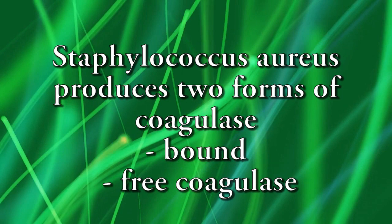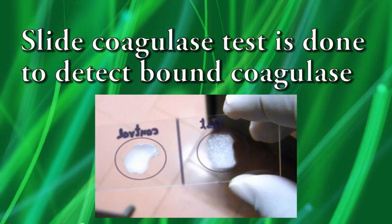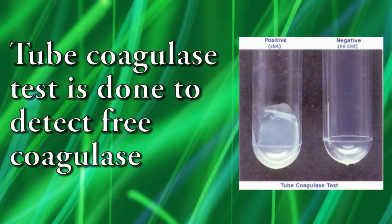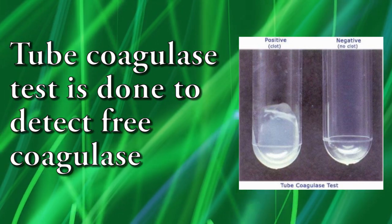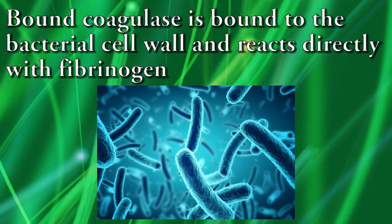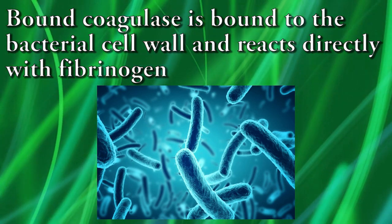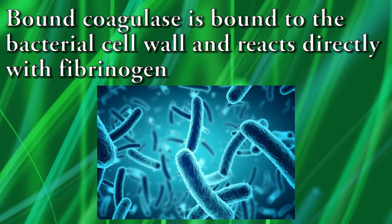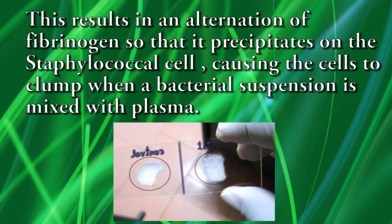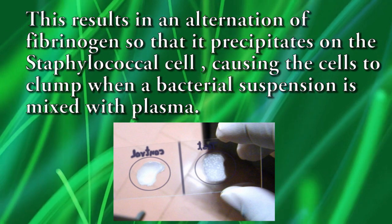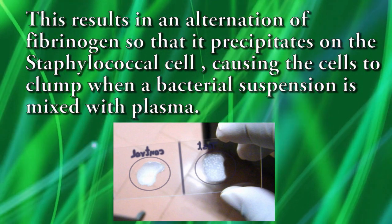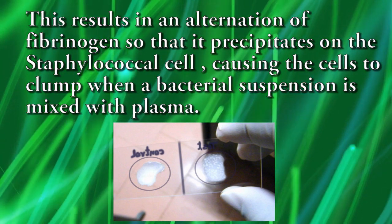The two forms are bound coagulase and free coagulase (precoagulase). The slide coagulase test is done to detect bound coagulase, while the tube coagulase test is done to detect free coagulase. Bound coagulase is bound to the bacterial cell wall and reacts directly with fibrinogen, resulting in an alteration of fibrinogen so that it precipitates on the Staphylococcus cell, causing the cells to clump when a bacterial suspension is mixed with plasma.